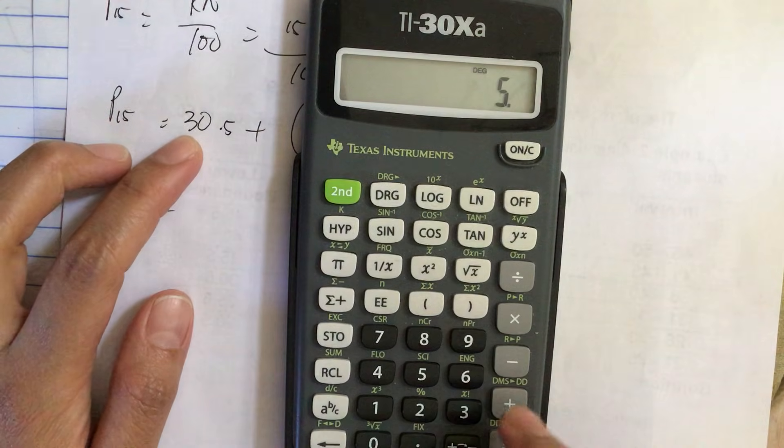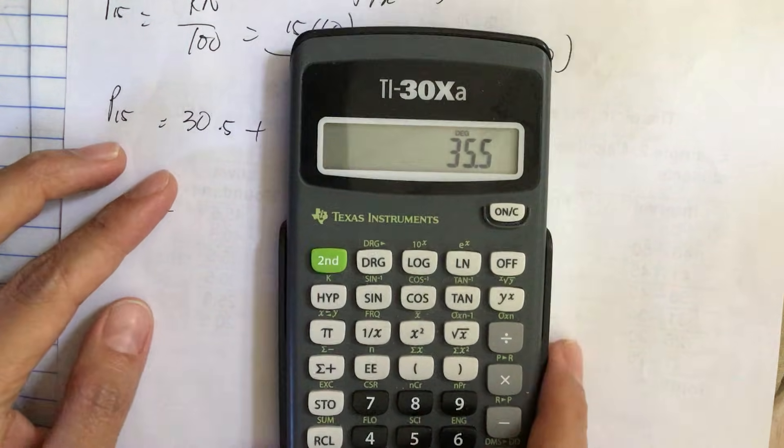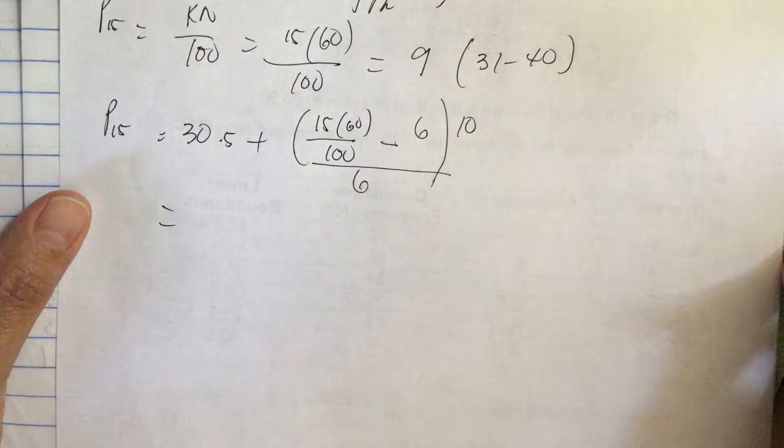It's equal to 5, and then we add the lower boundary plus 30.5, and it's equal to 35.5. So P15 is equal to 35.5.